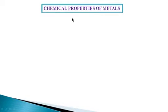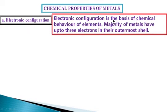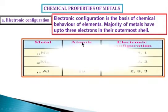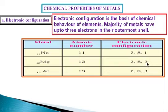Chemical properties of metals. First, electronic configuration — electronic configuration is the basis of chemical behavior of elements. The majority of metals have up to three electrons in their outermost shell. For example: sodium (atomic number 11) has electronic configuration 2, 8, 1 — one electron in the outermost shell. Magnesium (atomic number 12) has electronic configuration 2, 8, 2 — two electrons in the outermost shell of the magnesium atom.